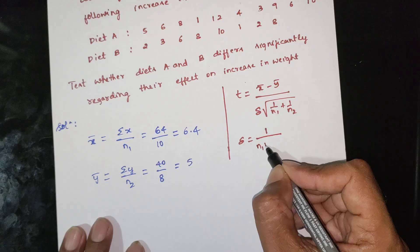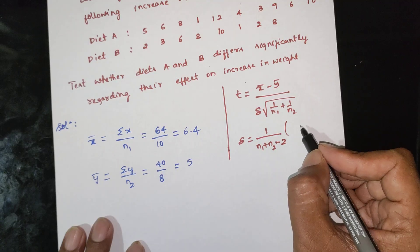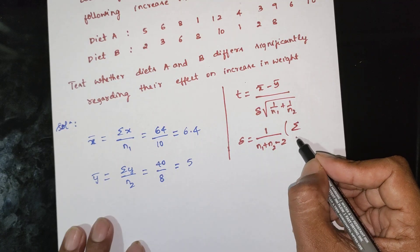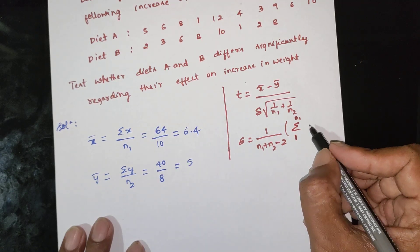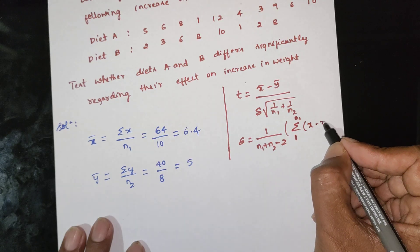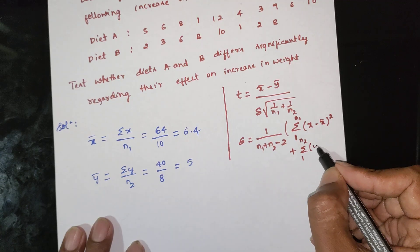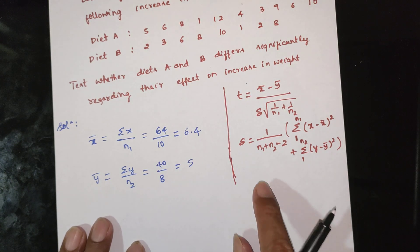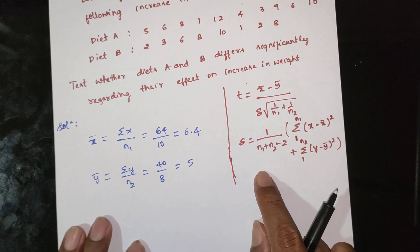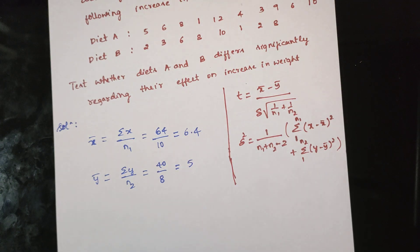The pooled variance S-squared formula is: 1 divided by (n1 plus n2 minus 2), multiplied by the summation from 1 to n1 of (x minus x-bar) squared, plus the summation from 1 to n2 of (y minus y-bar) squared. This can also be written as: (n1·s1² + n2·s2²) divided by (n1 + n2 − 2).